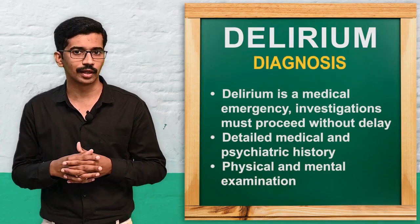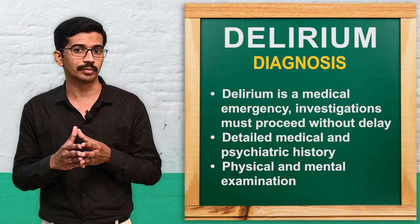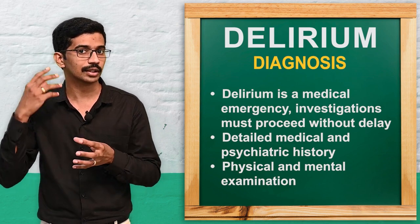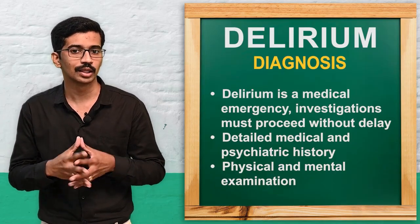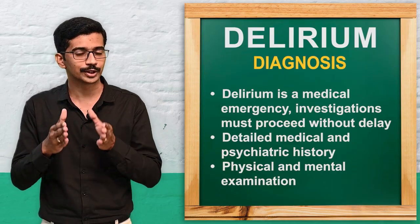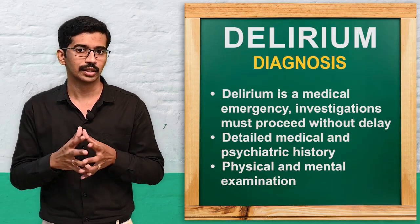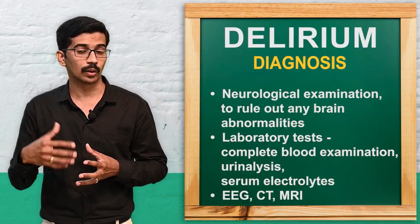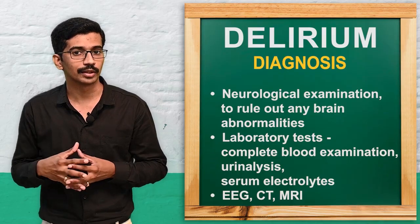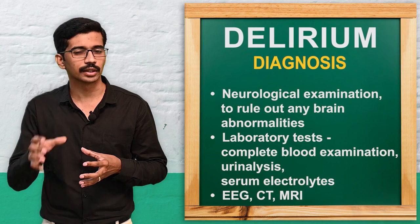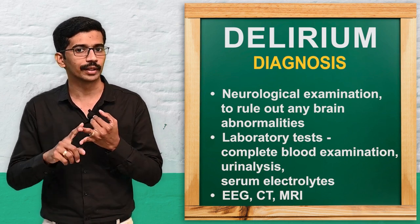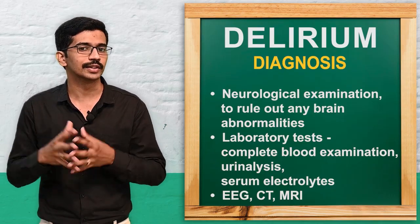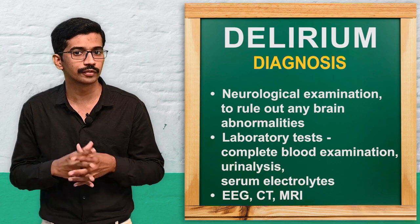Moving to the diagnostic evaluation — this is very important because delirium is considered a medical emergency, so we must act immediately; otherwise, it can affect the brain and cause severe complications. Usually it will be managed in the clinical setup itself, and if necessary, help from a psychiatrist can be obtained. Diagnostic evaluation includes detailed medical and psychiatric history, mental status examination, neurological examination, and all investigations such as blood examination, urine examination, serum electrolytes, ECG, EEG, CT scan, and MRI — all to find out or rule out the causes of delirium.